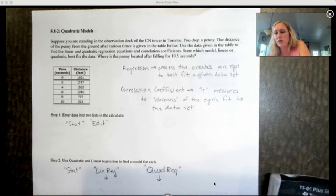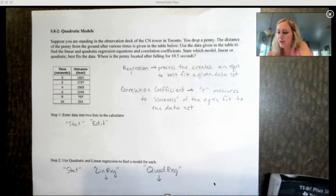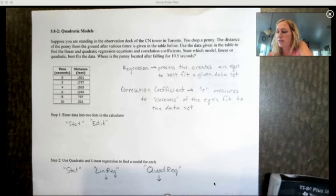What we're going to do is use our calculator to help us. Here's our situation: we are standing in the observation deck of the CN Tower in Toronto. You drop a penny. The distance of the penny from the ground after various times is given in the table below. Use the data given in the table to find the linear and quadratic regression equations and correlation coefficients. State which model, linear or quadratic, best fits the data. Where is the penny located after falling for 10 and a half seconds?